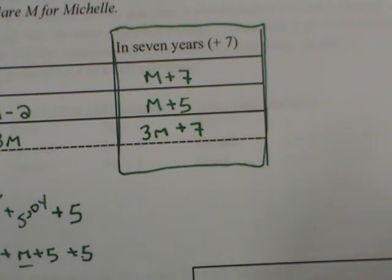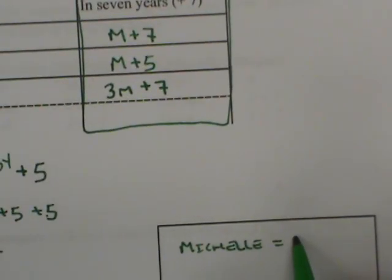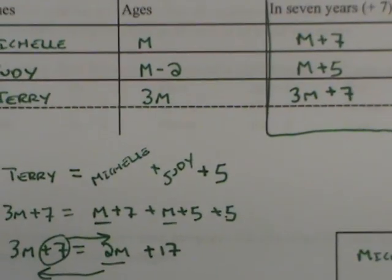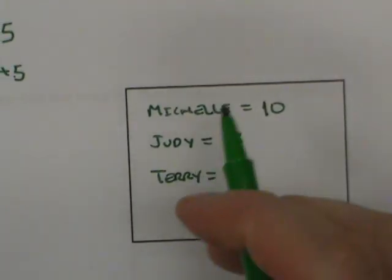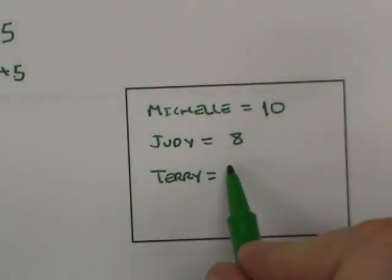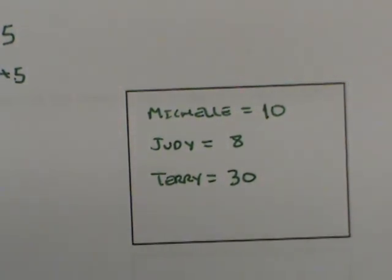Now I can answer the ages for each person today. Michelle, who is M, is ten. Judy, who is two years younger, is eight because ten minus two is eight. And Terry, represented as three M, is three times ten, which is thirty. And there you have an age word problem. See you next time, thank you.